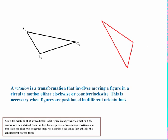Now let's look at this scenario. The problem is that they're not in the same orientation, so we're going to need to do something else. A rotation is a transformation that involves moving a figure in a circular motion, either clockwise or counterclockwise, depending on which is best. This is necessary when the figures are positioned in different orientations. Students should first label the different vertices so that they'll know what matches up with what, which is very important when you start getting into more complicated figures.